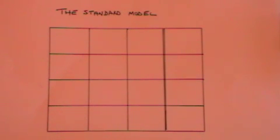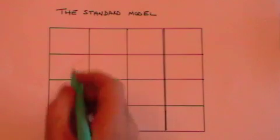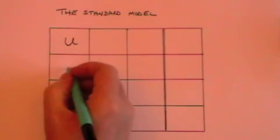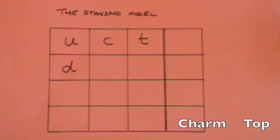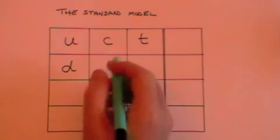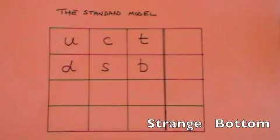The standard model is usually presented in a table like this. The first two rows are dedicated to the quarks. The up quark and the down quark fit into the table like this. These are the quarks which are the basic constituents of protons and neutrons. But there are two other quarks which are heavier than the up quark. These are the charm and top quarks. There are two other quarks which are heavier than the down quark: the strange quark and the bottom quark.